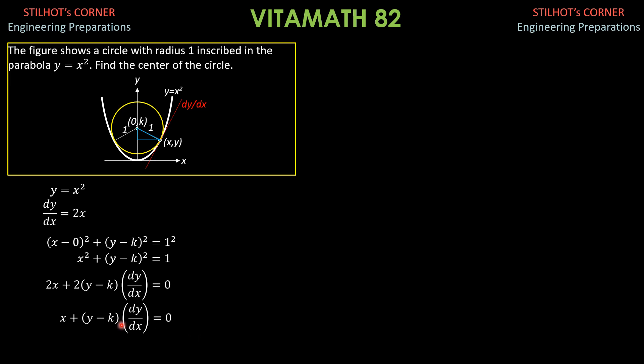So, from this equation, y minus k square is 1 minus x square. So, x plus y minus k times dy dx, which is 2x for the parabola. We substitute it here because the idea is the slope of the tangent is common for the parabola and for the circle, as mentioned earlier. Then, we divide everything by x. 0 over x is still 0. So, this becomes 1 quantity y minus k times 2 equals 0.